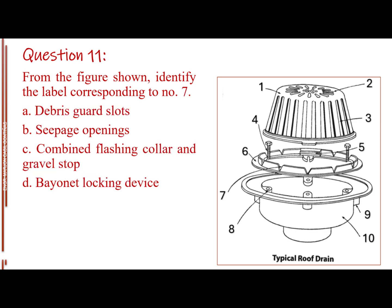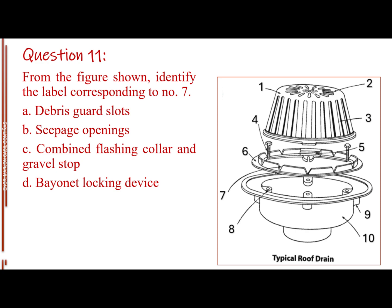Question number 11. From the figure shown, identify the label corresponding to number 7. Letter A, debris guard slots. Letter B, seepage openings. Letter C, combined flashing collar and gravel stop. Letter D, bayonet locking device. The answer is letter B, seepage openings.